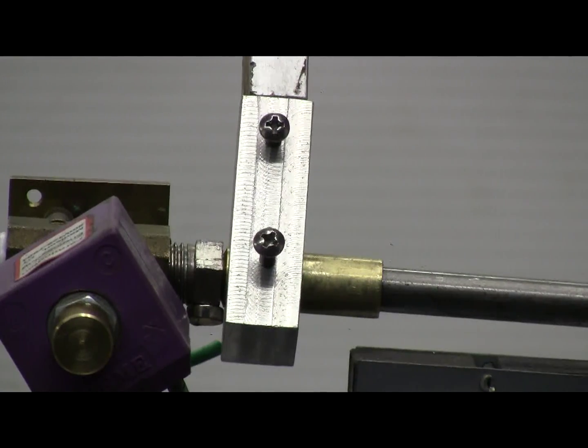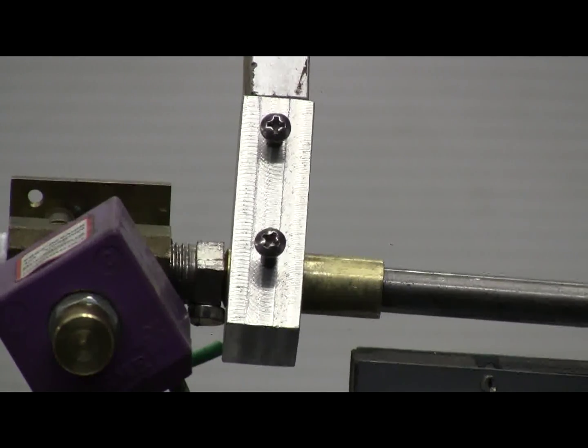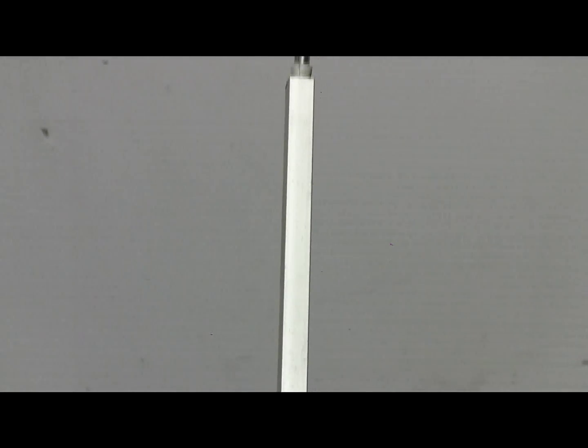Basically it's a stick type mag that keeps the BBs in line one after another singly. That's why it's so long and thin.